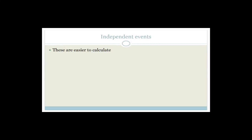Independent events are easier to calculate. Two events are independent if and only if the probability of A and B is equal to the probability of A multiplied by the probability of B. So they're independent if P(A ∩ B) = P(A) × P(B).